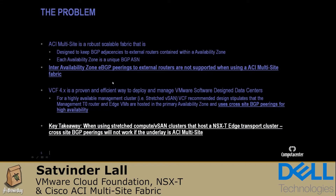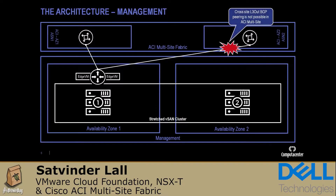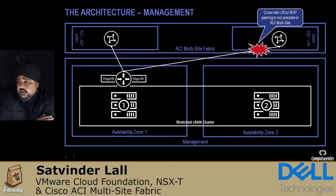Looking at the picture, this is the management domain in a VCF 4 build. You've got a typical stretch cluster — a primary half and a secondary half across the AZs — with edge VMs and T0 routers sitting above the primary vSAN nodes trying to peer across sites. What you can't do is cross-site L3 outs. I'll now switch to a lightboard to draw the components and show how we work around that problem.